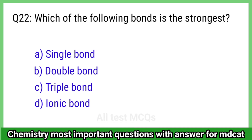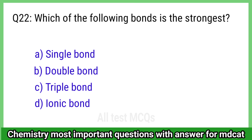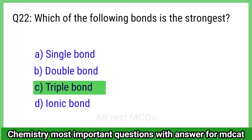Question 22: Which of the following bonds is the strongest? The right answer is option C, triple bond.